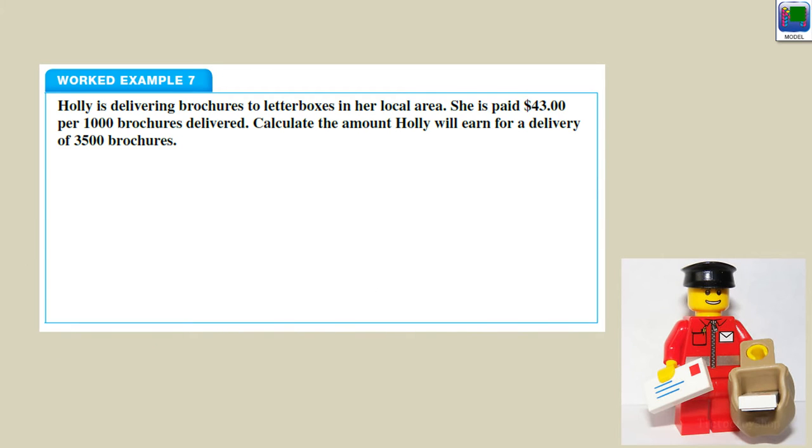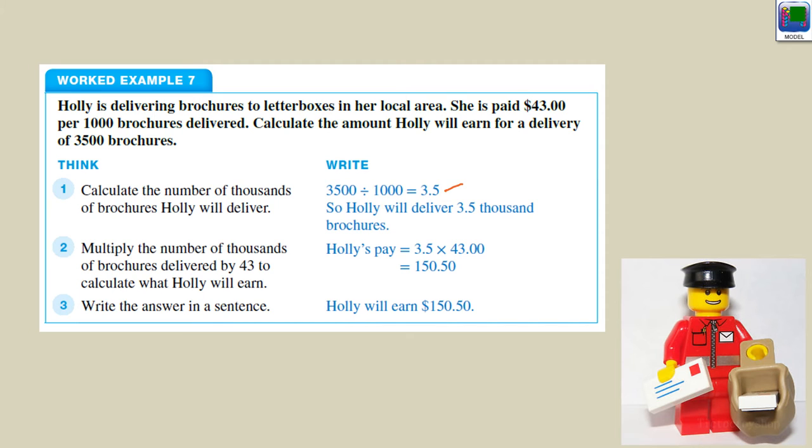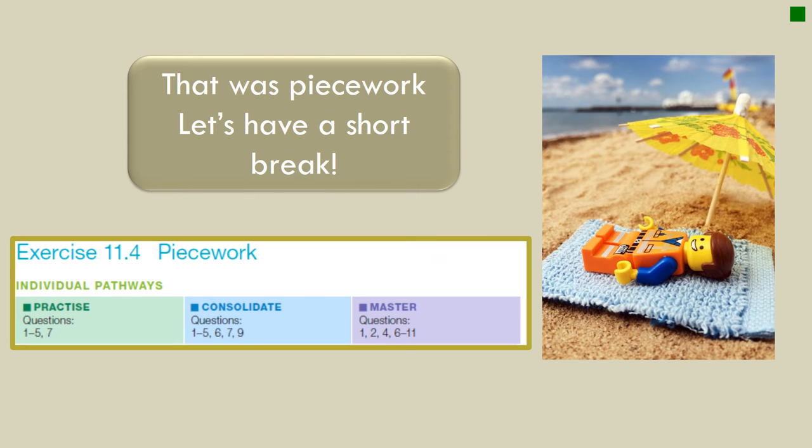Holly delivers brochures. She gets $43 per 1,000 brochures. How much does she earn when she delivers 3,500 brochures? She gets paid per 1,000. If she's delivering 3,500, divided by 1,000, that's 3.5 lots of the 1,000 she's delivering. And each of those gets her that much. So 3,500 brochures multiplied by $43 per 1,000, $150.50 she earns. That's a lot of walking though, 3,500 brochures. She's probably covering a lot of ground to earn that $150. You can have a short break. You can lie down like Emmett is there on the beach before we have a look at the next bit.